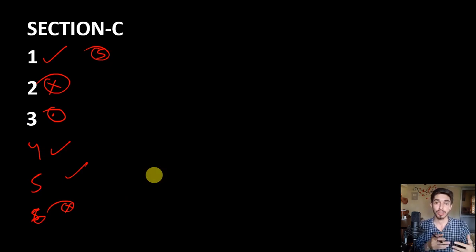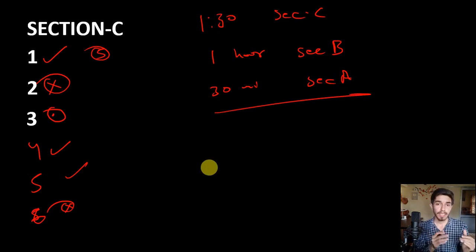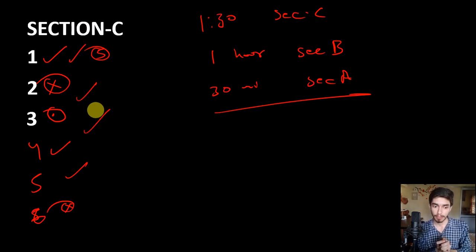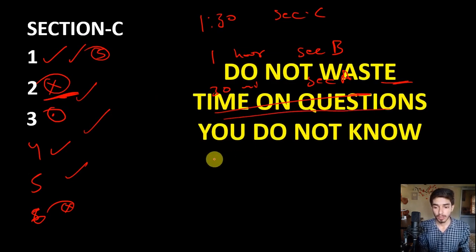Now here comes the question of timing. How much time you have to give to each section? A rough estimate is: 1 hour 30 minutes for Section C, 1 hour for Section B, and 30 minutes for Section A. If you rightly apply this strategy, you will never fall short with time because you won't be wasting your time with the questions you don't know how to answer. The most important thing is: do not waste your time on questions you do not know.